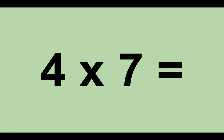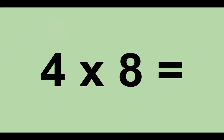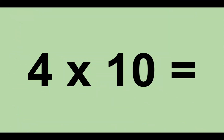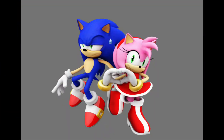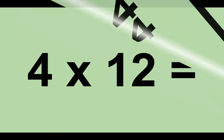Four times seven equals twenty-eight. Four times eight equals thirty-two. Four times nine equals thirty-six. Four times ten equals forty. Four times eleven equals forty-four. Four times twelve equals forty-eight.